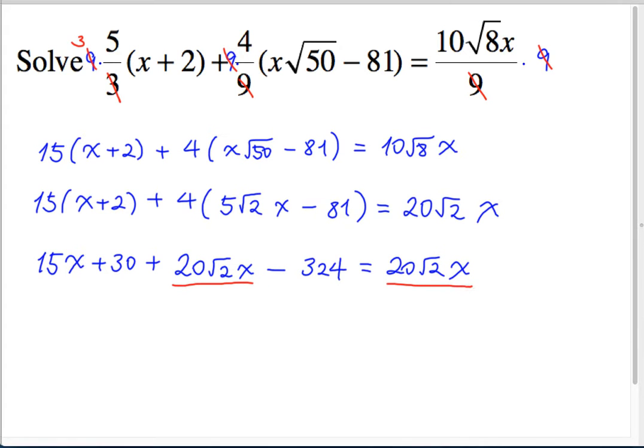Okay. So if it's on both sides, what can we do with it? Both sides of the equal sign. So we can subtract both sides by 20 root 2 x, and both of these will disappear. Okay. Right? So at the same time, on the left-hand side, we're left with 15x, then there's 30 and minus 324.